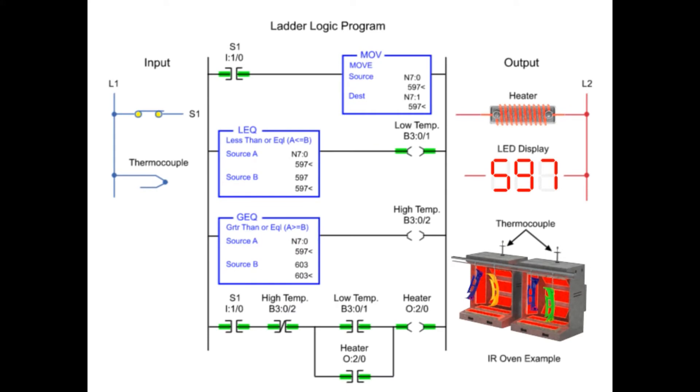In this on-off temperature control example, the heater turns on when the temperature falls to or below 597 degrees, and turns off when the temperature reaches 603 degrees or more.